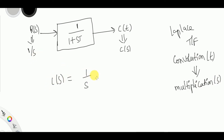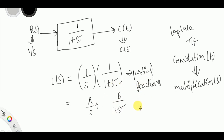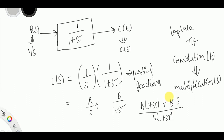So simply to obtain C(s), it is enough to multiply the input 1/s by 1/(1+sT). Now you can use the method of partial fractions to get the output in the time domain. You can write it as A/s plus B/(1+sT). Taking LCM, the numerator becomes A(1+sT) + Bs. Since the numerator is 1, taking coefficients of s gives: A·T + B = 0 since there are no s terms.